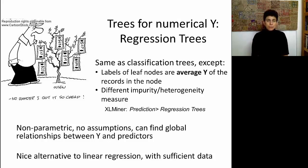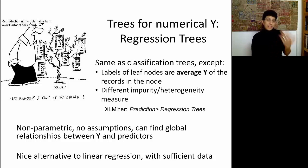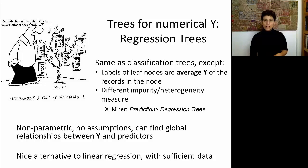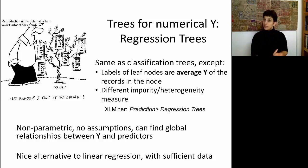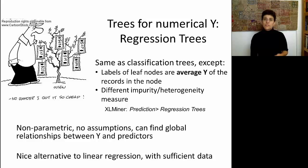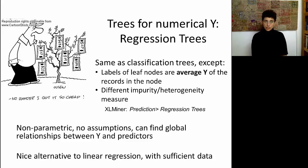The other difference is the impurity measures — the Gini index and entropy — which measure the homogeneity of a certain node before or after a split. Here we need something different because we don't have classes anymore; we have a numerical outcome. One well-known measure is standard deviation. When you use software, simply choose a classification or regression tree based on the type of output. In Excel Miner, regression trees are in the prediction menu, whereas classification trees are in the classification menu.